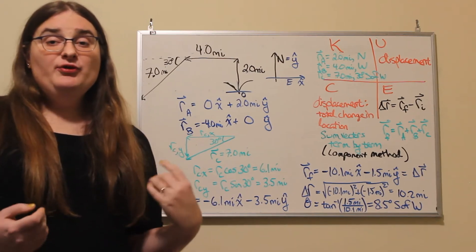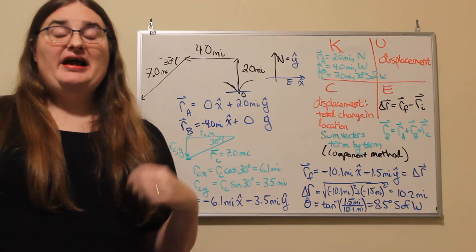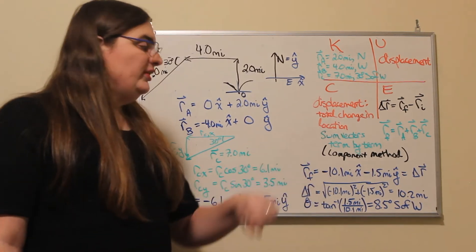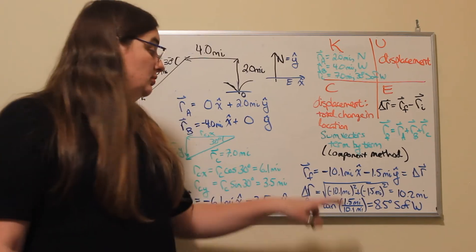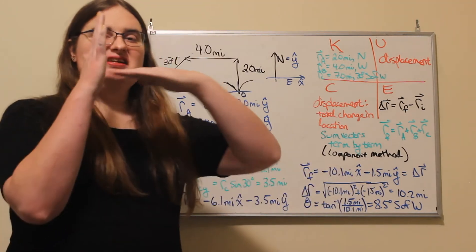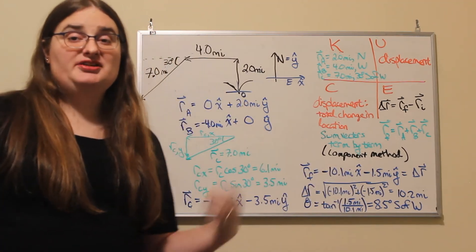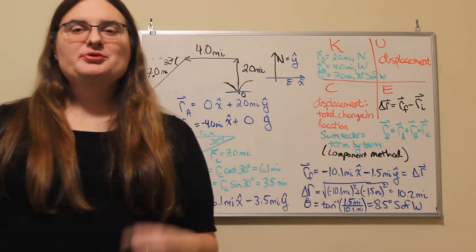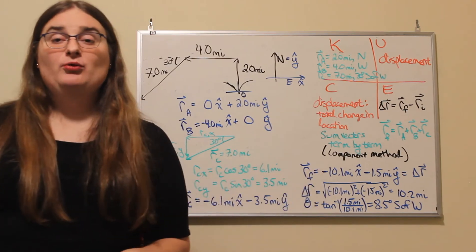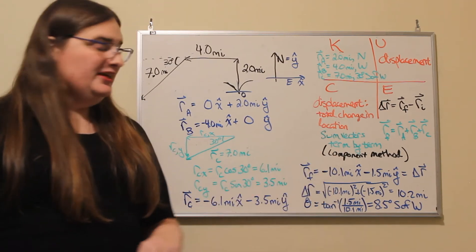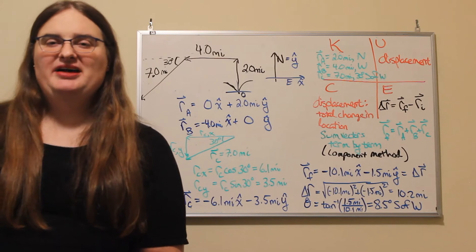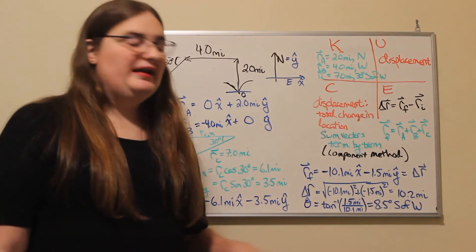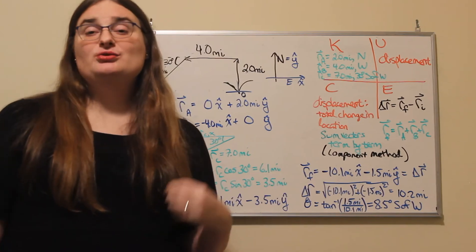However, if we need to know the magnitude and the direction of that displacement, then we can use the Pythagorean theorem. We'll take these two components as the two 90 degree sides in a right triangle, square them, add them together and take the square root to find our hypotenuse. Negative 10.1 miles squared plus negative 1.5 miles squared, add them, take the square root and I get a value of 10.2 miles.